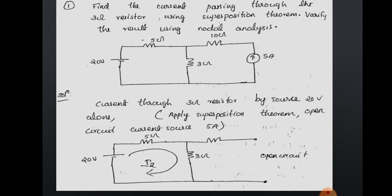Verify the result using nodal analysis. The circuit contains a 20 volt voltage source, a 5 ohm resistance, a 3 ohm resistance, a 10 ohm resistance, and a 5 ampere current source. You are asked to find out the current passing through the 3 ohm resistance.